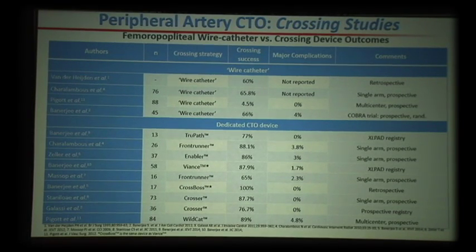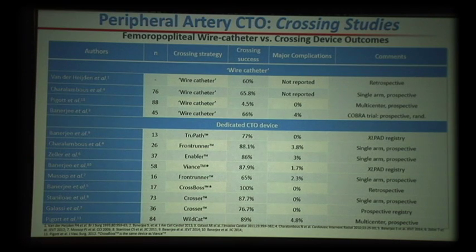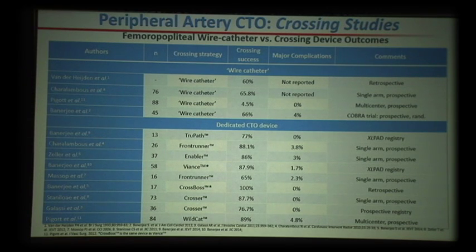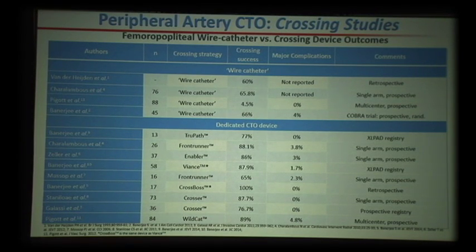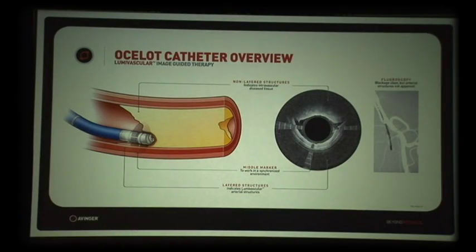Let me take you into a deep dive into the evidence. The point I want to make is that there is not a single randomized controlled trial comparing wire catheters and CTO crossing devices in this area. It's all based upon personal opinions — and they are worth something — but they cannot be counted as true evidence. There is a real need for randomized clinical studies.